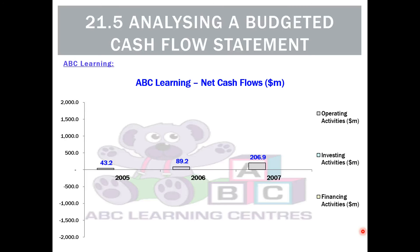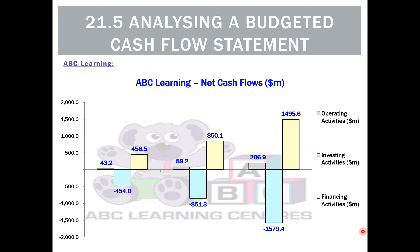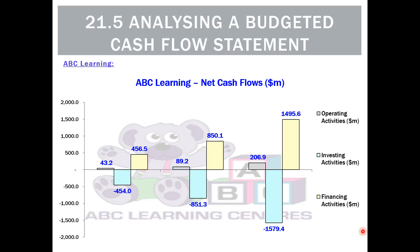Looking at an example from Unit 3 — ABC Learning — from operating activities they made net cash inflows, which is good; in the last year it was $207 million. But they were spending a lot on non-current assets, so their investing activity outflows were huge, and the only way to survive was by borrowing money. They actually went bankrupt within 12 months of that last data point. That's a situation where, maybe if we'd looked at 2006 and said perhaps next year we won't generate enough from operating, we could have deferred buying some childcare centres and borrowed less money.